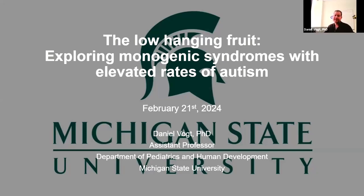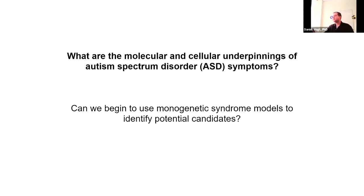Thank you very much. I appreciate everyone attending today. Something my lab is very interested in is trying to use rare disease monogenic syndromes with elevated rates of autism to understand if we can find common underlying causes for autism and other neuropsychiatric disorders. The big question I want to ask is: what are the molecular and cellular underpinnings of autism spectrum disorder symptoms? Can we use monogenic syndromes—where we know a single gene is mutated—to identify potential cellular and molecular candidates?